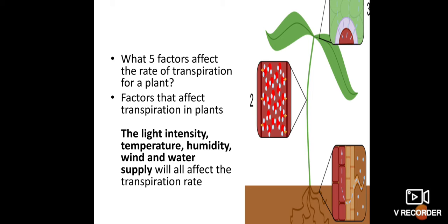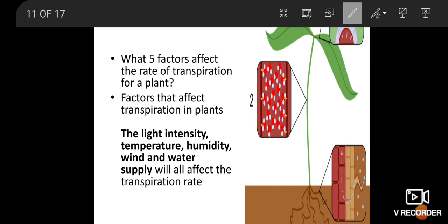What five factors affect the rate of transpiration in plants? Factors affecting transpiration are divided into two parts: external parts and internal parts. Transpiration is affected by several external factors such as temperature, light, humidity, and wind speed. These are called external factors.